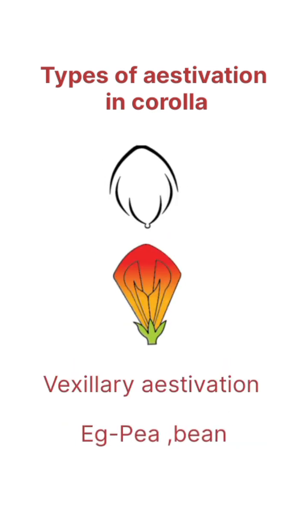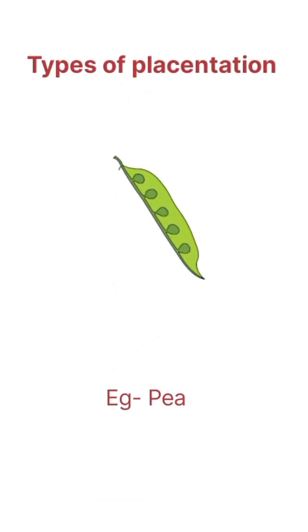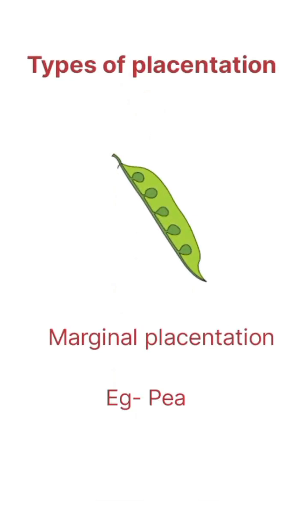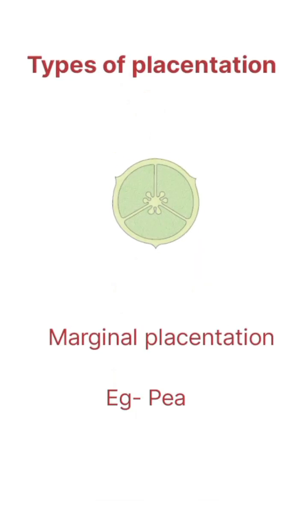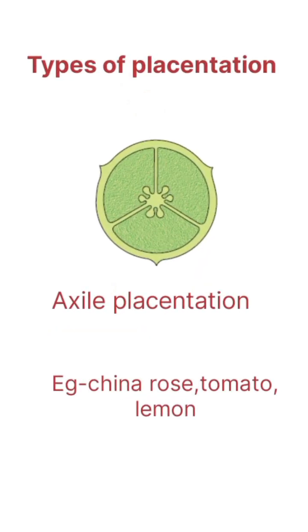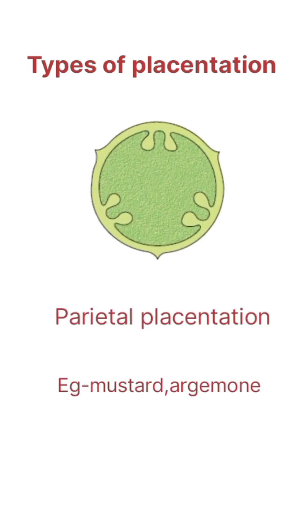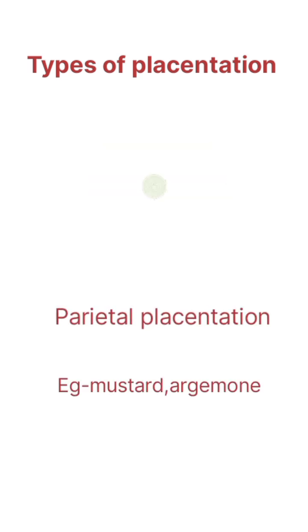Next is vexillary aestivation. Types of placentation: first is marginal placentation, next is axile placentation, next is parietal placentation.